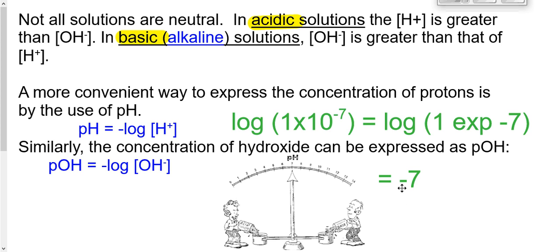Dropping that negative sign — because pH is the negative of the log — negative 7 becomes pH of 7. So in pure water, the pH is 7, because the amount of hydrogen ions is 1×10⁻⁷. This is a much easier way to think about the amount of hydrogen in water. Because we have the exact same amount of hydroxide, the pOH of pure water is also 7.